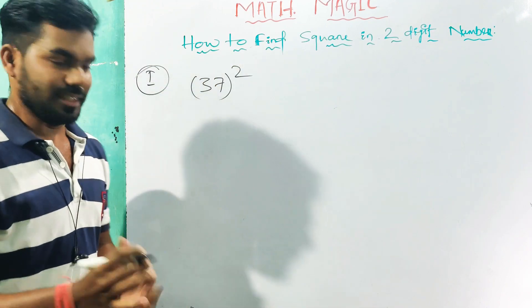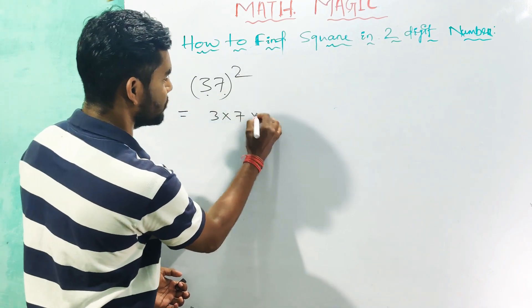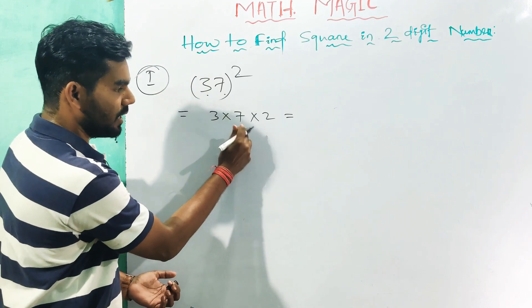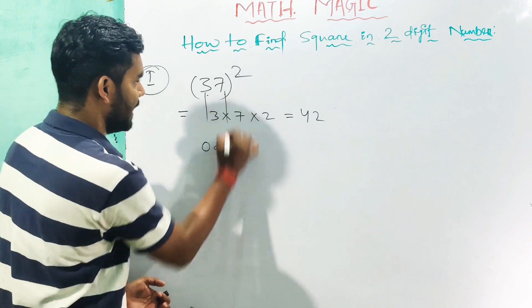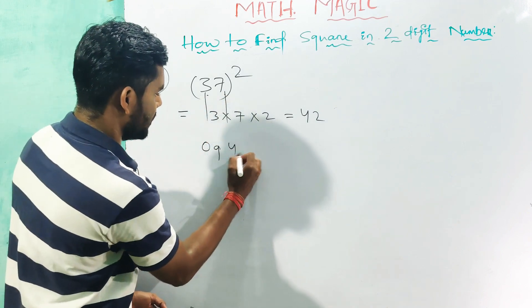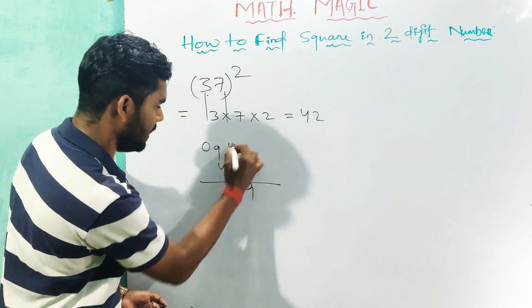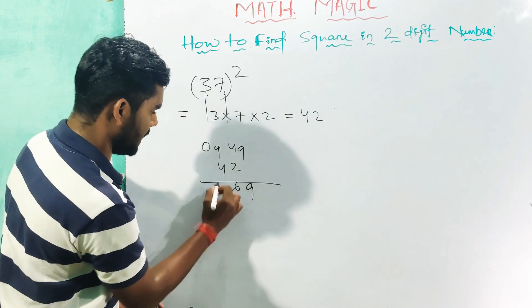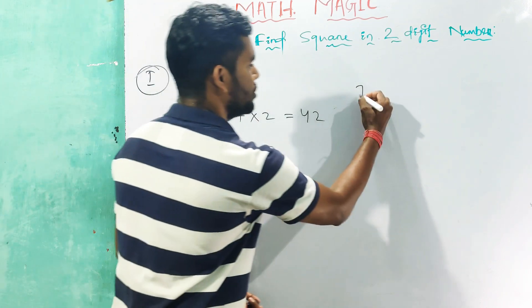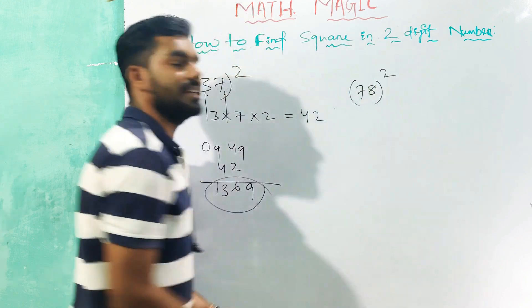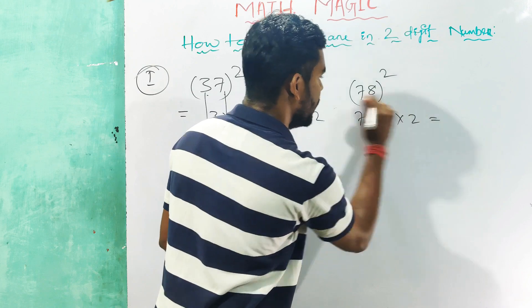So 37 squared — first step. This is your answer.